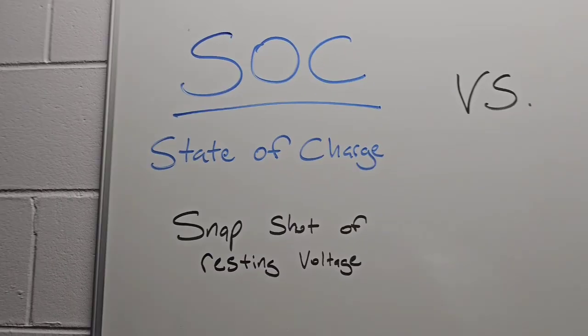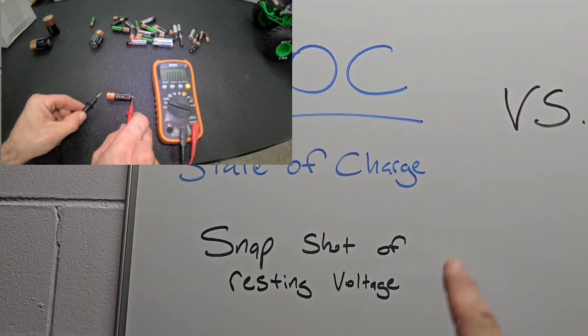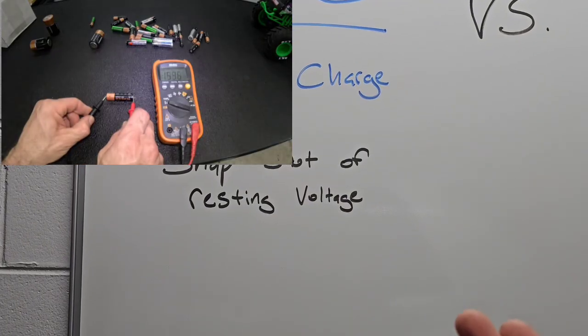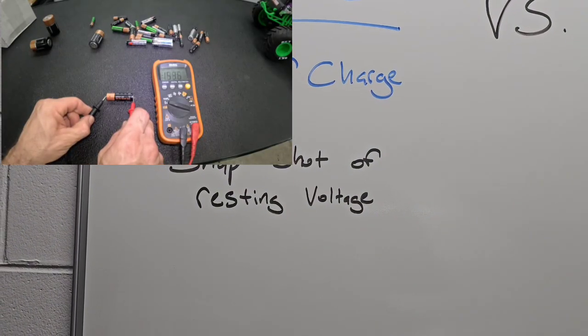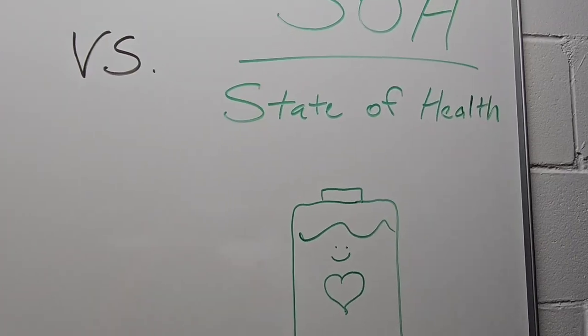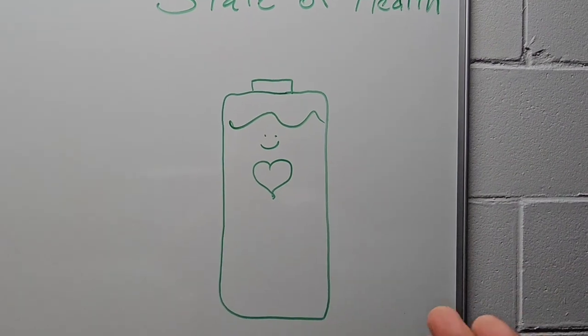So simply using a multimeter is going to only give you the state of charge, and that's like basically a snapshot of the current resting voltage. That doesn't really tell us much about how well that battery is going to perform. But what will tell us is SOH - the state of health - and the bounce test does a better job of doing that.